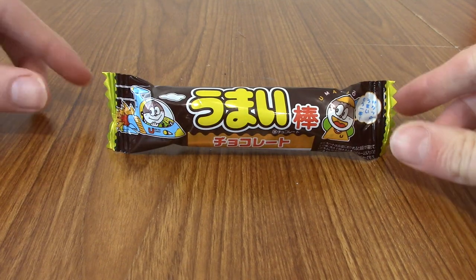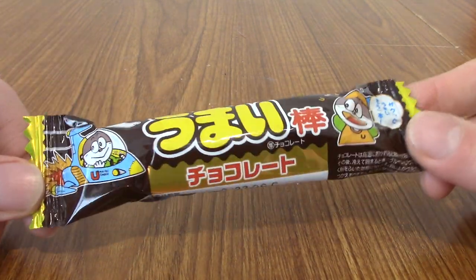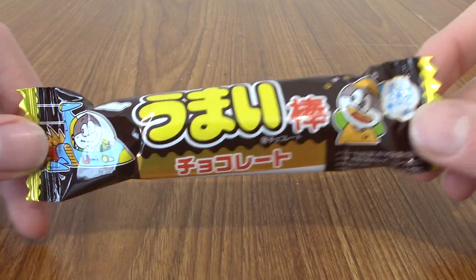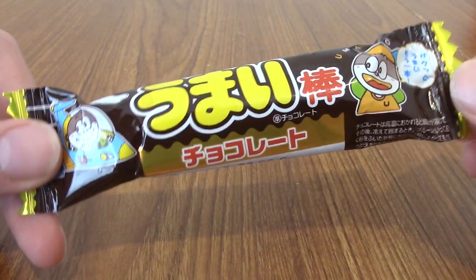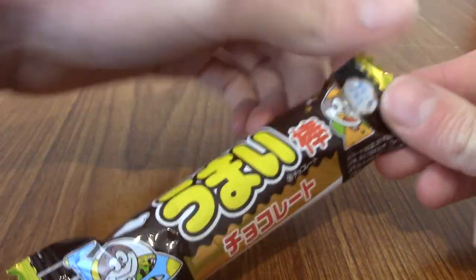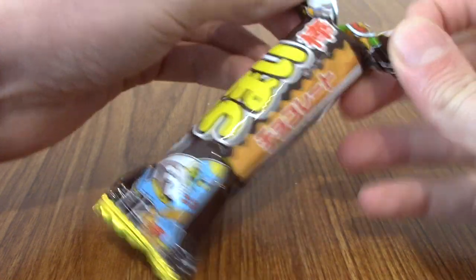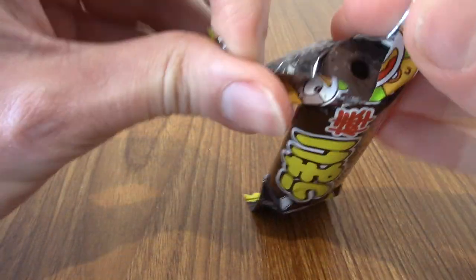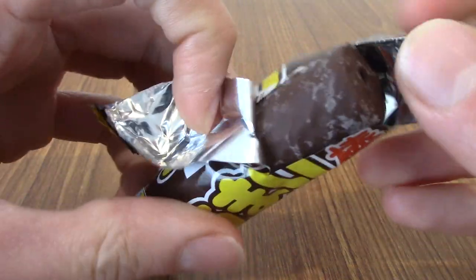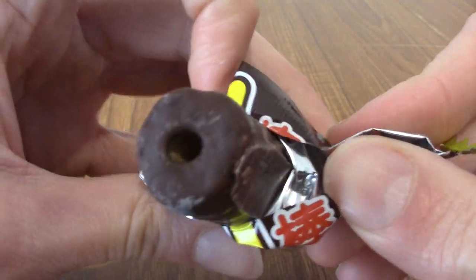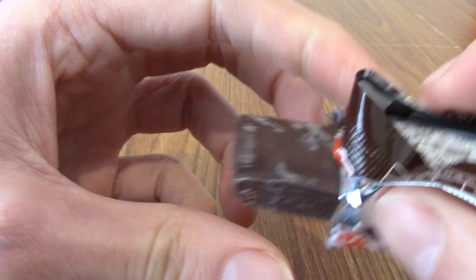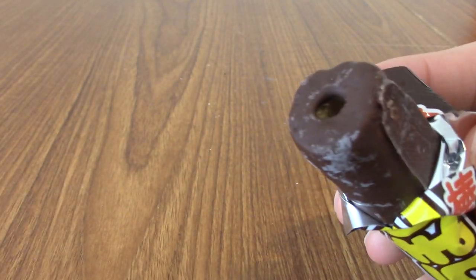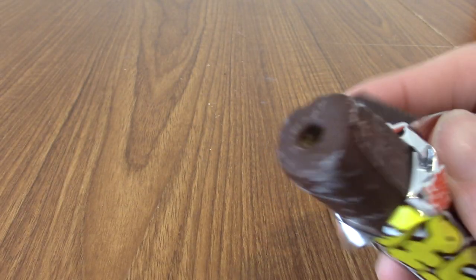All right. Time for some chocolate umaybo. I'm quite excited for this one. So umaybo are typically savory kind of corn sticks, you know, kind of prawn or soy sauce and stuff like that. But this one taste of chocolate. Ooh, it looks like chocolate too. Yeah, I'm very excited. I think it's actually covered in melted chocolate, which is even cooler. Right, I'm just going to go take a bite.